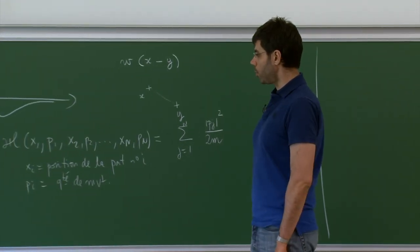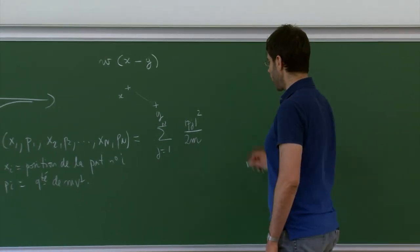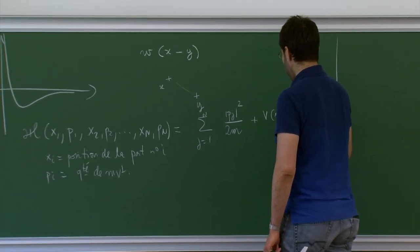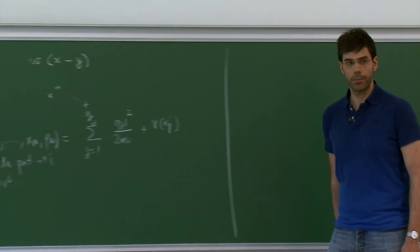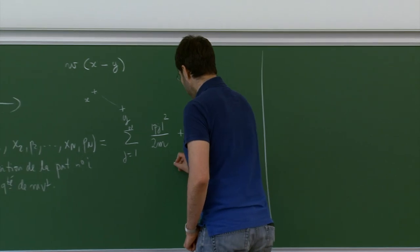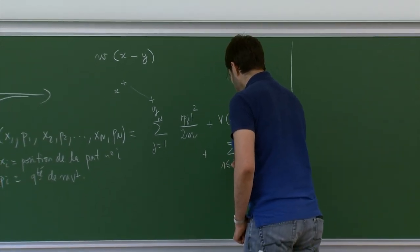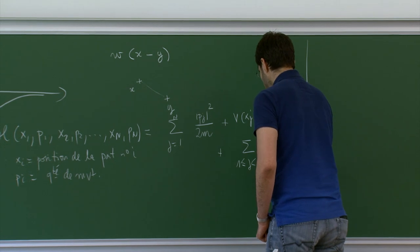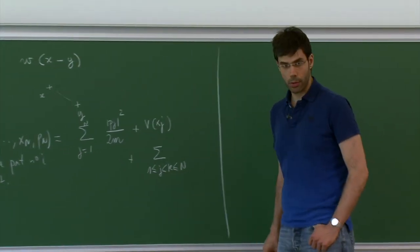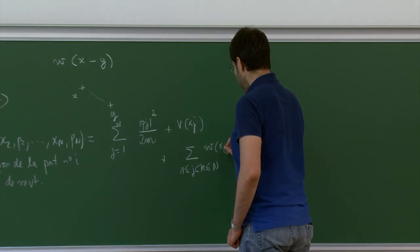M is the mass of each of these particles — they are all identical, they all have the same mass. Then each particle feels the external potential V, giving the sum of V(X_j). And finally, the sum over all pairs j strictly less than k of W(X_j − X_k).